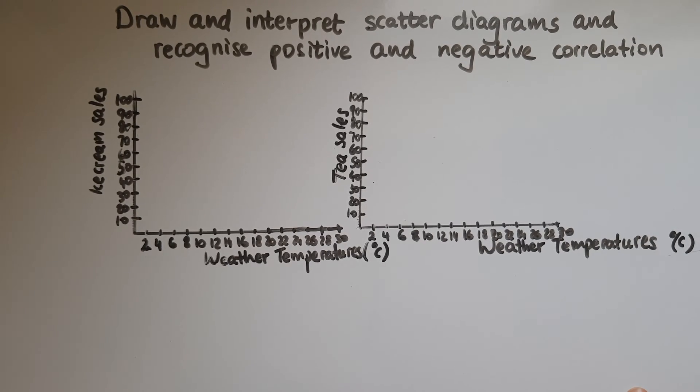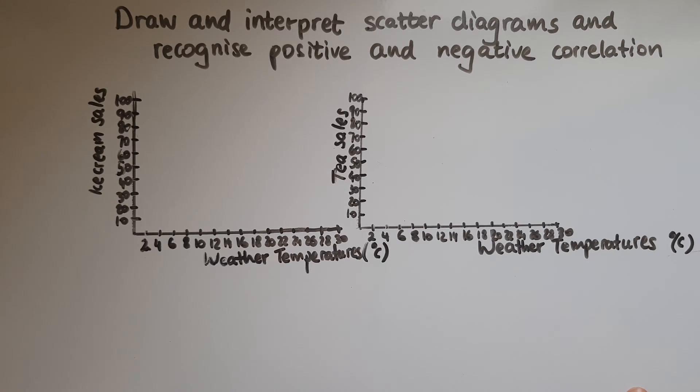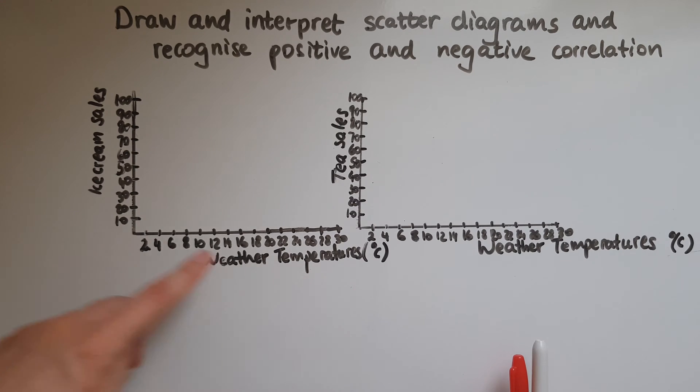So I've started the process of drawing two scatter diagrams. In the first one I'm trying to show you the correlation or relationship between weather temperatures and ice cream sales. So I've got some data and based on that I'll plot those points.